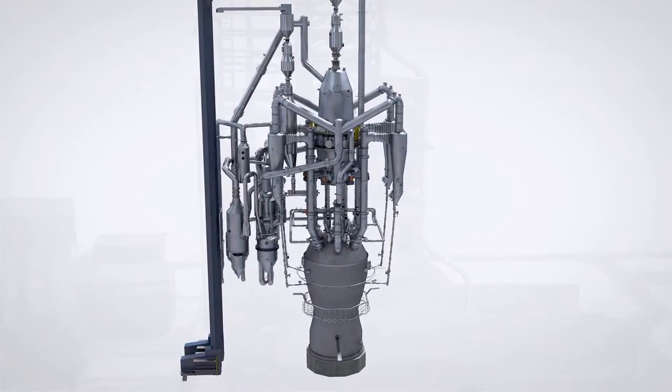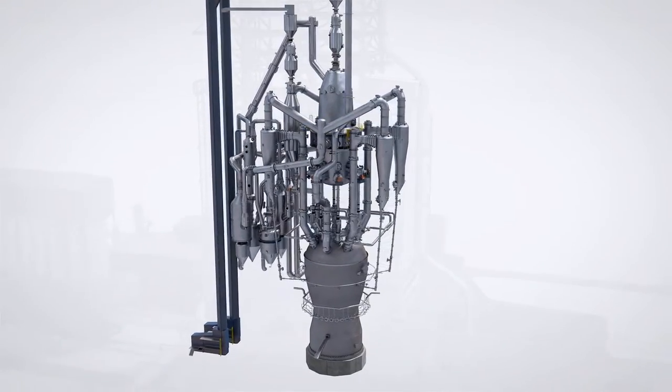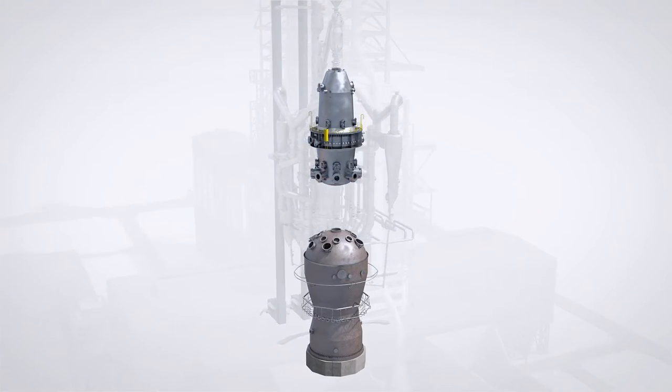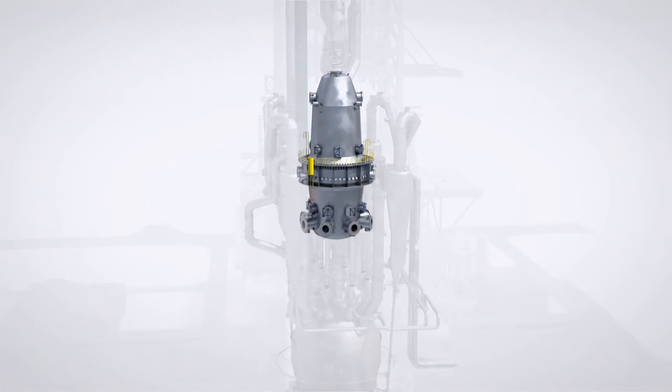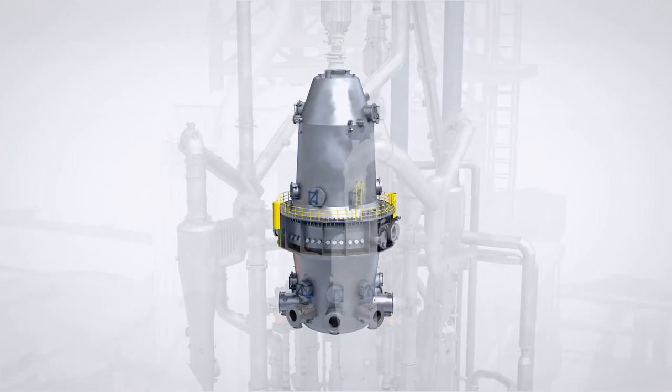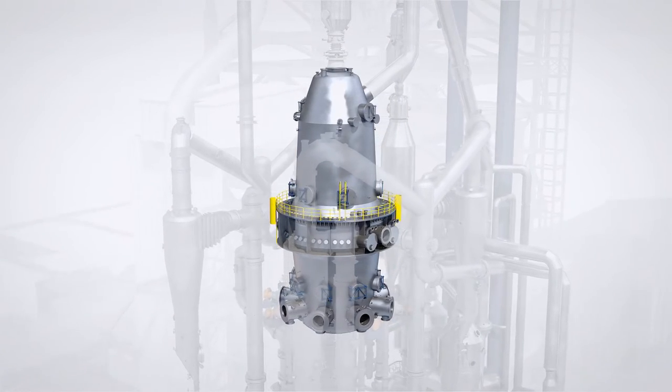A key feature of the Corex process is that iron production is carried out in two separate reactors. In the reduction shaft, iron oxides are first reduced to direct reduced iron.